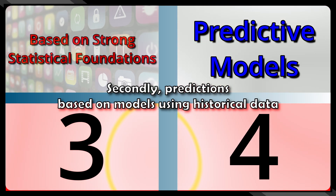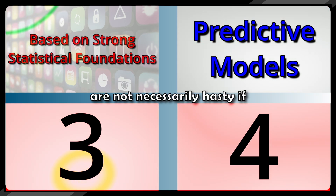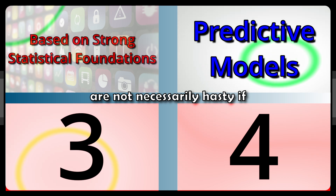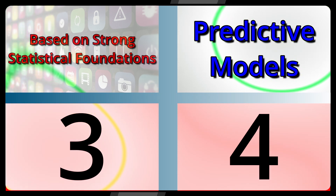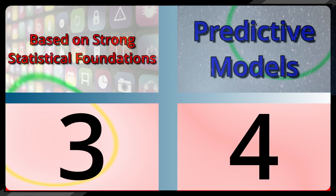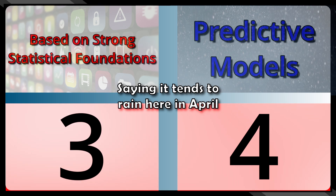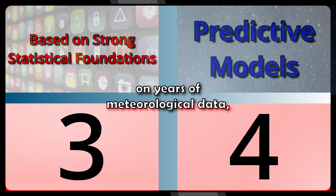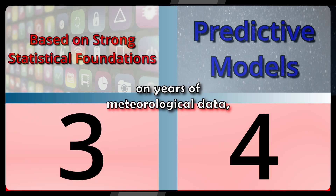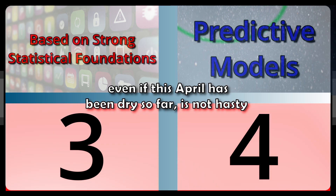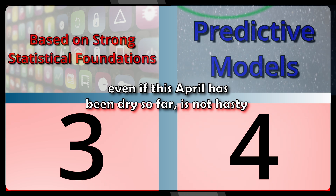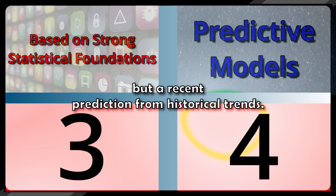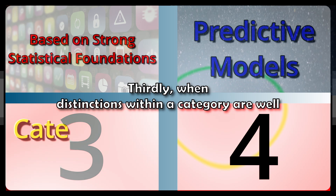Secondly, predictions based on models using historical data are not necessarily hasty if they are based on proven algorithms and relevant variables. For example, saying "it tends to rain here in April" based on years of meteorological data, even if this April has been dry so far, is not hasty, but a reasoned prediction from historical trends.